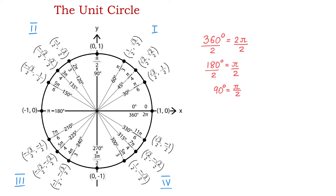For each of the angles on the unit circle, there are corresponding points, and each point is given by x and y coordinates. For the angle of 0 degrees, the corresponding point is (1, 0). For the 90-degree angle, the point is (0, 1). For 180 degrees, the point is (−1, 0), and for 270 degrees we have (0, −1).